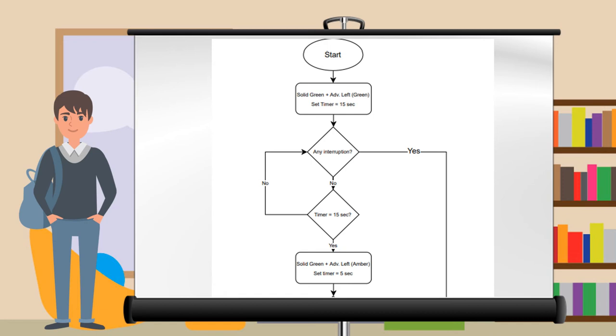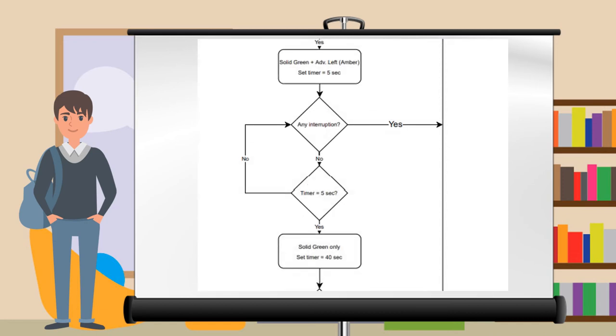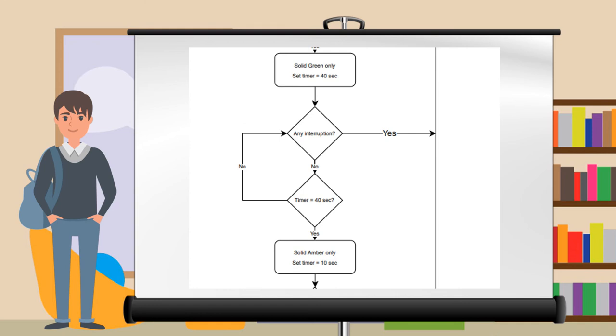After the 15-second timer, we go on to the solid green plus advanced amber left arrow and set the timer for 5 seconds. We then again perform the same steps and check for interruption. We then go on to solid green only and set the timer to 40 seconds and do the same interruption and timer settings.